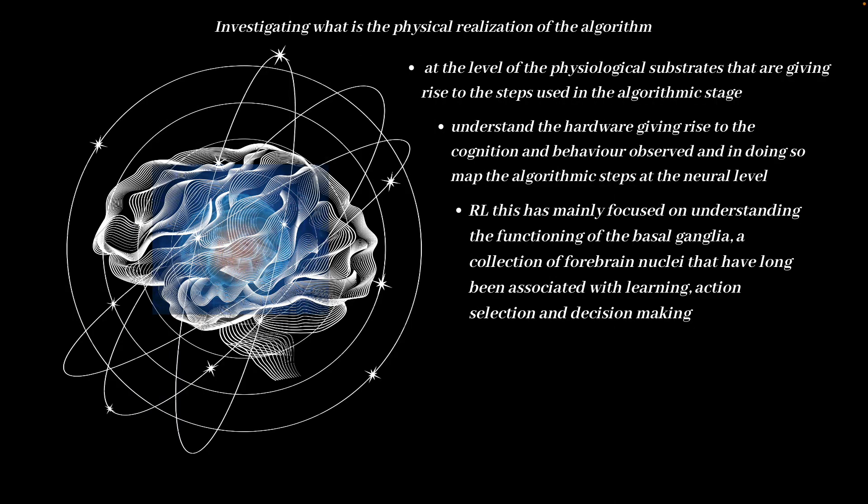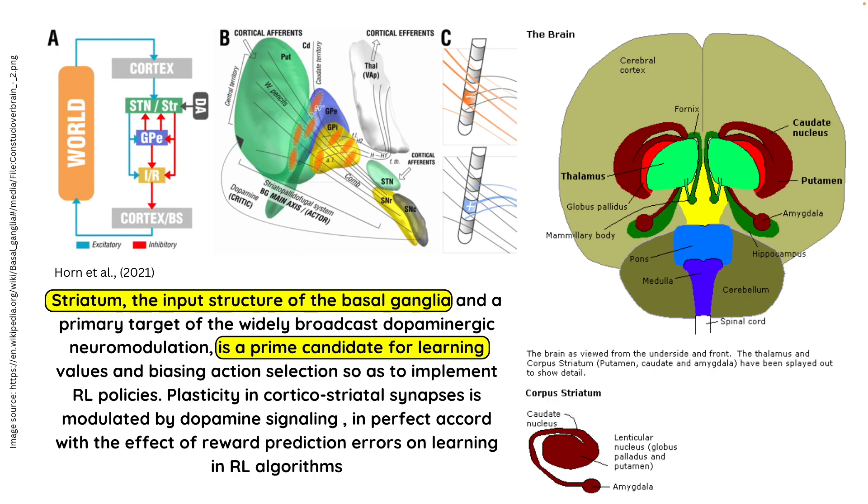In the context of reinforcement learning, this is mainly focused on understanding the functioning of the system algorithm called basal ganglia, which is a collection of four brain nuclei that have been long associated with learning, action selection, and decision making, and are putatively studied in the context of reinforcement learning. The idea that basal ganglia implements reinforcement learning algorithm stems from the close correspondence between the responses of midbrain dopamine neurons and the reward prediction error signal at the heart of algorithms that explain reinforcement learning.